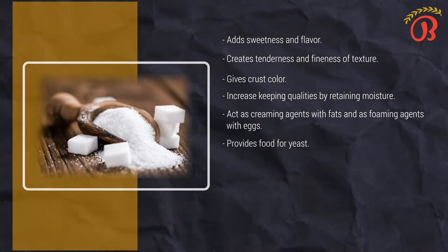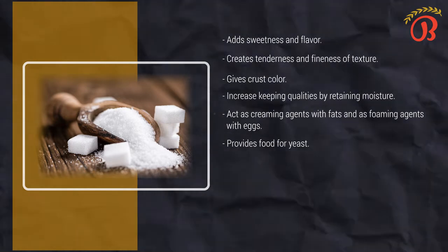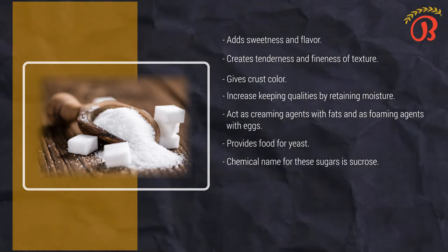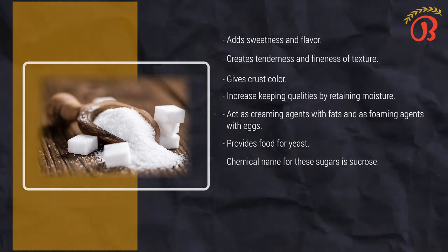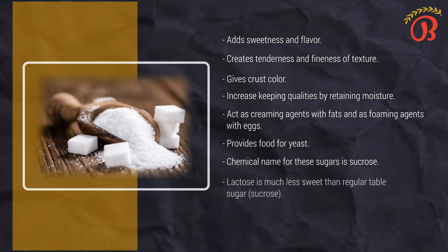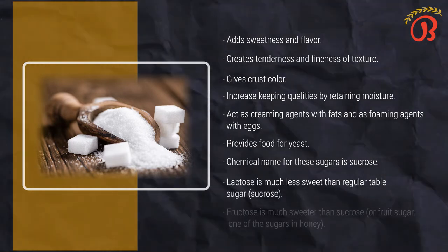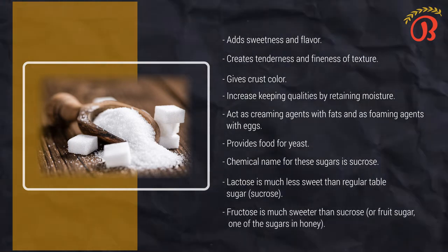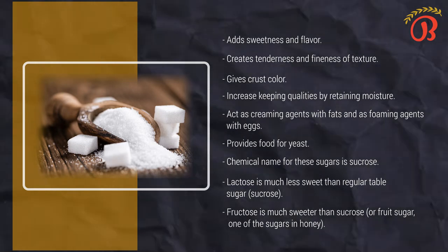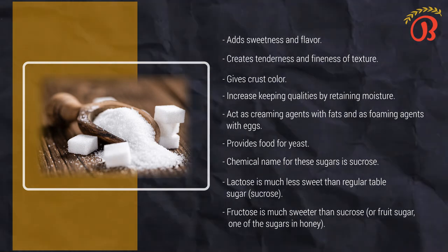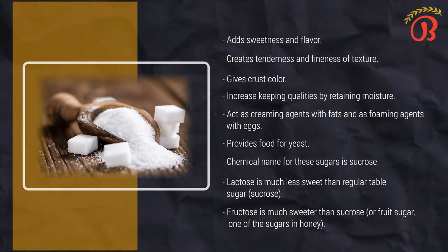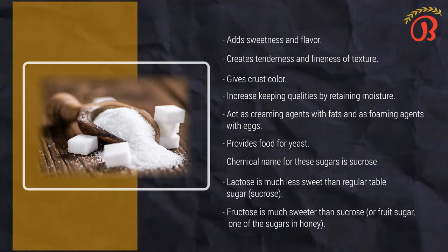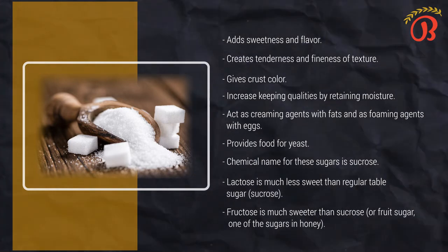We customarily use the term sugar to refer to regular refined sugars derived from sugarcane or beets. The chemical name for these sugars is sucrose. However, other sugars of different chemical structure are also used in the bake shop. All these sugars have different degrees of sweetness. For example, lactose is much less sweet than regular table sugar, while fructose is much sweeter than sucrose. All sugars share one characteristic that is important for bakers and pastry chefs to understand — they are hygroscopic. This means they attract and hold water. Some sugars are more hygroscopic than others. Fructose found in honey is much more hygroscopic than sucrose or table sugar.